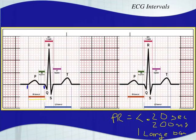So the two measurements we've learned to remember now are: QRS duration should be less than 120 milliseconds, which is roughly three small boxes; and the PR interval, which should be less than 200 milliseconds or 0.20 seconds.